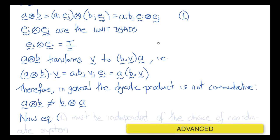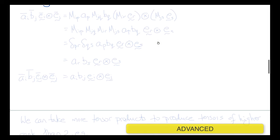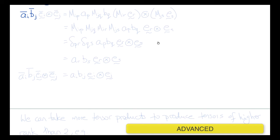Equation one above must be independent of the choice of coordinate system. Just like we did for vectors, we should be able to write the components of the tensor in a new frame of reference and convert between frames using the rotation matrix. So let's rewrite A dyadic B in components of the new frame EI_bar. We get Ai_bar Bj_bar times EI_bar dyadic EJ_bar, which equals Mip Ap times Mjq Bq, converting the components, times Mir Mrs EI_bar dyadic Es, converting the base vectors.